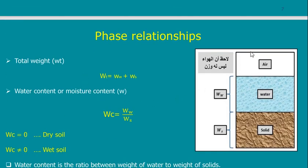Looking at the three-phase drawing: air, water, and solid. Air has no weight, so the total weight of a sample is W = Ww + Ws — that's all. If I ask for the volume of the sample, it is the sum of the three volumes. The beginning of engineering is to transfer description into numbers or equations leading to numbers.